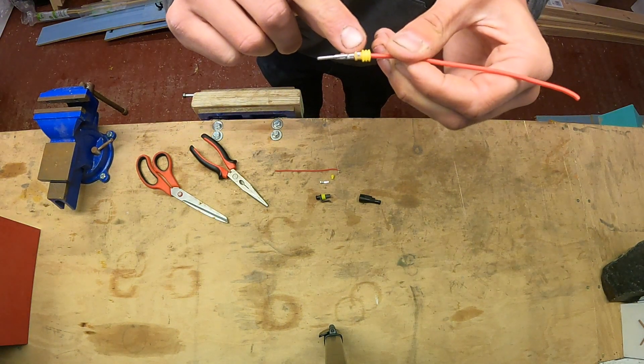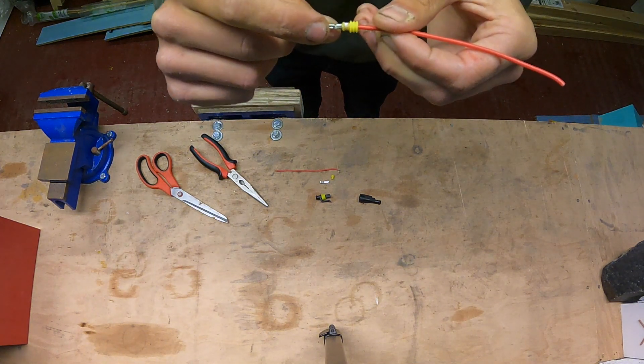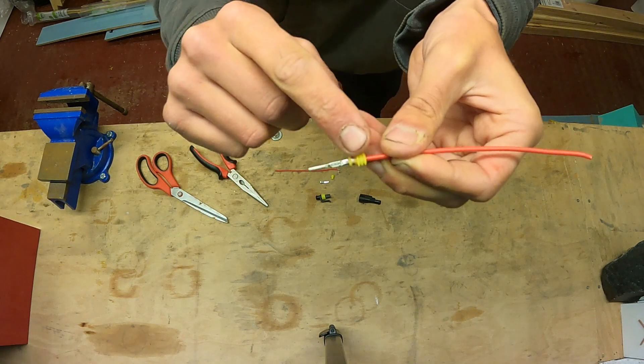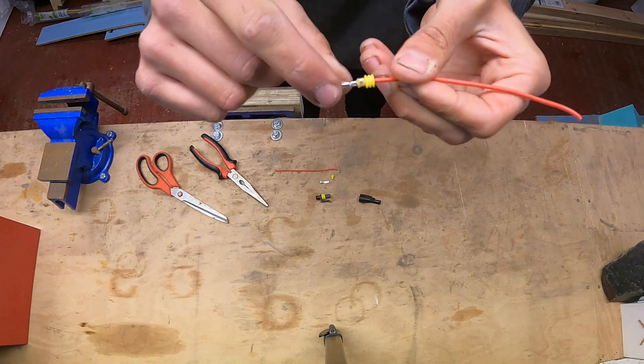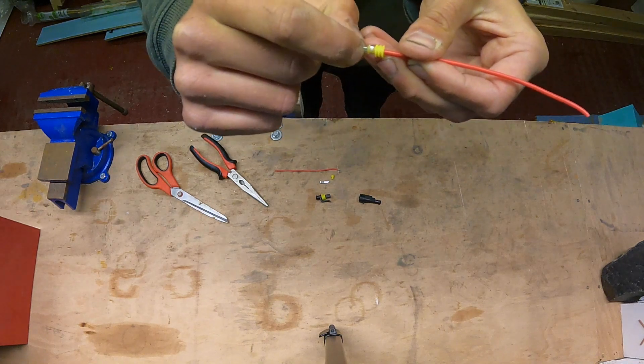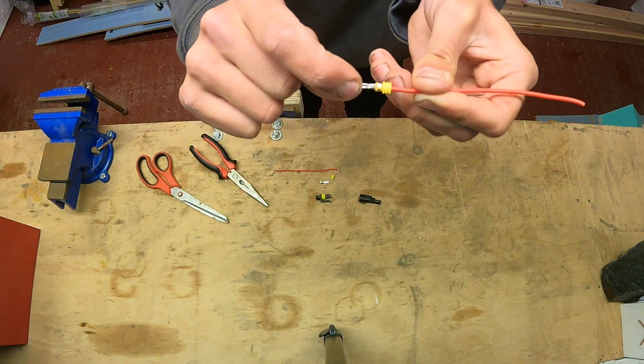You can just see the longer metal tabs at the back are just squeezing onto that yellow seal, compressing it onto the wire to make a nice waterproof connection there, and then the shorter metal tabs have crimped down tightly onto the exposed wire to make a connection to the wire.